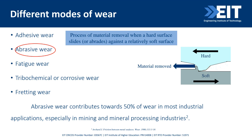There are five major types of wear: adhesive wear, abrasive wear, fatigue wear, tribochemical or corrosive wear, and fretting wear. My topic is all about abrasive wear. I picked abrasive wear because it's one of the most significant forms — it contributes almost 50% of wear in most industry applications, especially mining and mineral processing industries. In Australia, mining is a major industry, so abrasive wear plays a huge role in machinery and equipment.